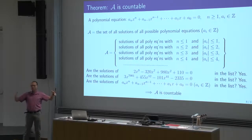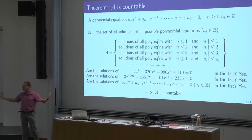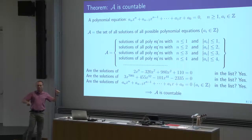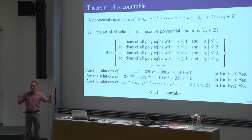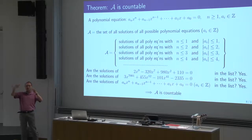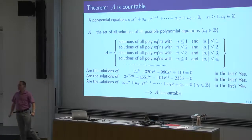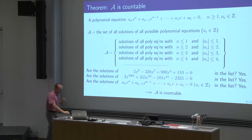Where is square root of 2 in that list? Square root of 2 was a solution of x squared minus 2 — we'll see it on the second row. How about square root of 2 plus square root of 3? On the tenth row, because we had x to the fourth minus 10x squared plus 1. So every number that we have seen is definitely in this list. The set of algebraic numbers is countable.